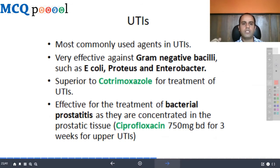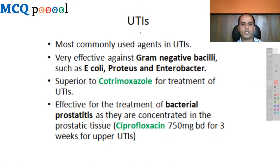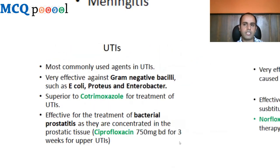Fluoroquinolones are the most commonly used agents in UTIs, effective against gram-negatives like E. coli, Proteus, and Enterobacter. They are superior to cotrimoxazole for UTI treatment. Norfloxacin and ofloxacin are highly used for UTI treatment. They are also effective for bacterial prostatitis as they concentrate in prostate tissue. Ciprofloxacin 750 mg BD for three weeks is used for upper UTIs.